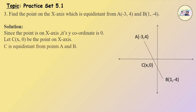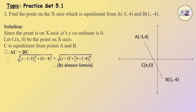C is equidistant from point A and B. Therefore AC is equal to BC. Therefore, by the distance formula: under root of (x minus of minus 3) the whole square plus (0 minus 4) the whole square is equal to under root of (x minus 1) the whole square plus (0 minus of minus 4) the whole square.